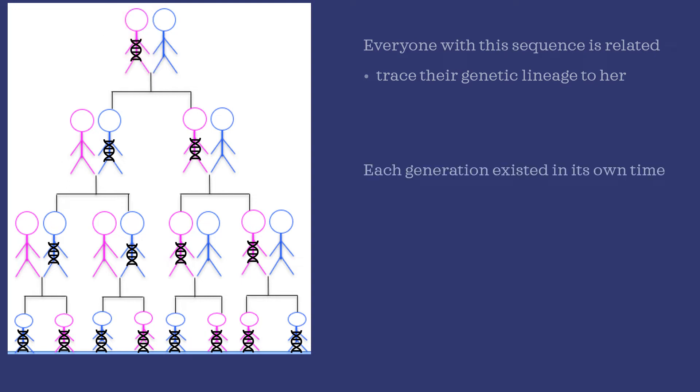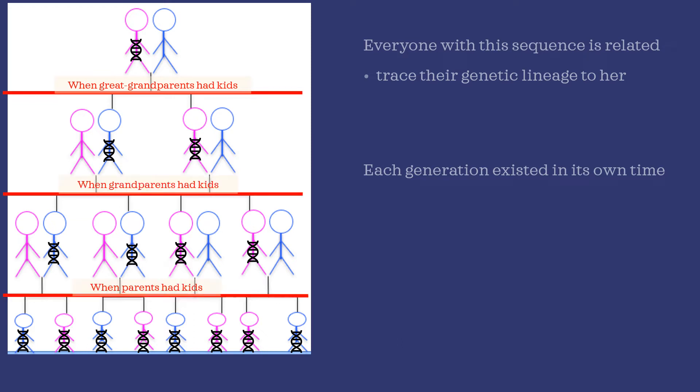One other thing to note on this family tree is that each generation is recorded along a row. These rows represent the average year individuals in that generation had their kids. So here is when great grandparents had their kids, this is when grandparents had their kids, and this is when the parents had their own kids.